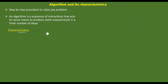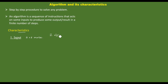First of all, input. An algorithm must take zero or more inputs. For example, adding two numbers — that's two inputs for the algorithm. For instance, a Hello Printing algorithm takes zero inputs.